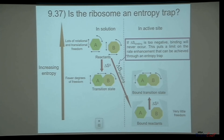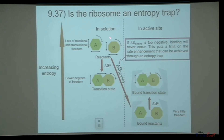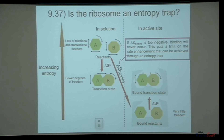This idea of an entropy trap has its limits. Note that when we bind the reactants in the active site, that's associated with a big loss of entropy. If this binding entropy is too negative, binding won't occur. And therefore that puts a limit on the extent of rate enhancement you can achieve through an entropy trap.